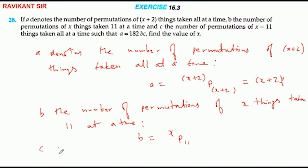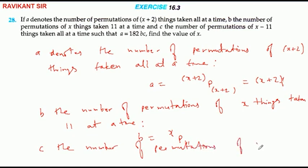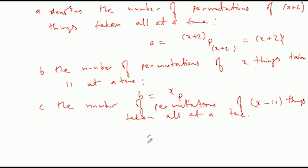उसके बाद दिया है कि C, the number of permutations of X minus 11 things taken all at a time। यानी C किसको denote कर रहा है — X minus 11 things में से X minus 11 things को choose करता है, तो C equal होगा X minus 11 का factorial।